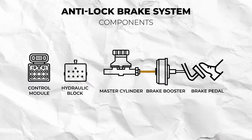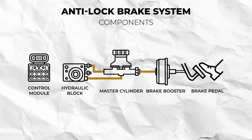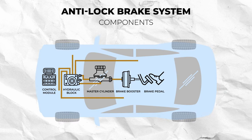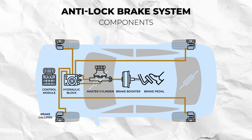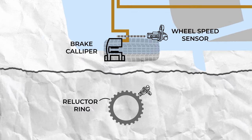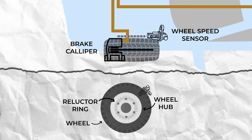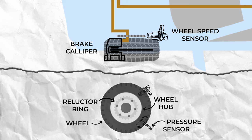The hydraulic unit also contains multiple solenoids and valves, and it is fitted with multiple inlets which are fed from the master cylinder and outlets which feed each brake caliper. Wheel speed sensors are fitted next to the sensor pickup ring, or reluctor ring, which is fitted to the wheel hub. Finally, you have the wheel itself, which in modern systems uses a pressure sensor to read the tyre's pressure.